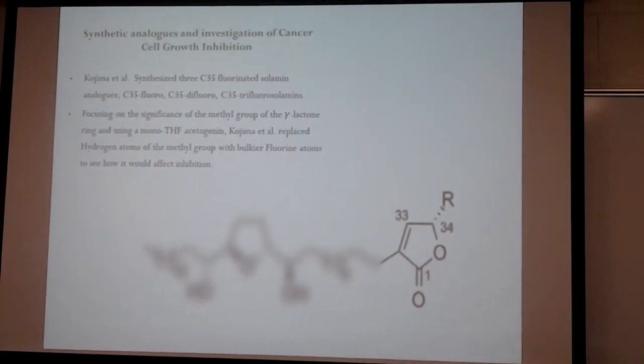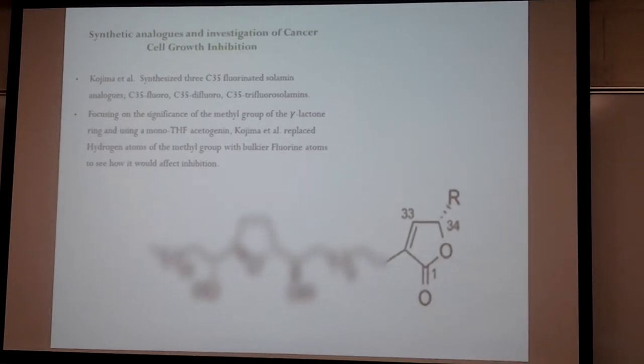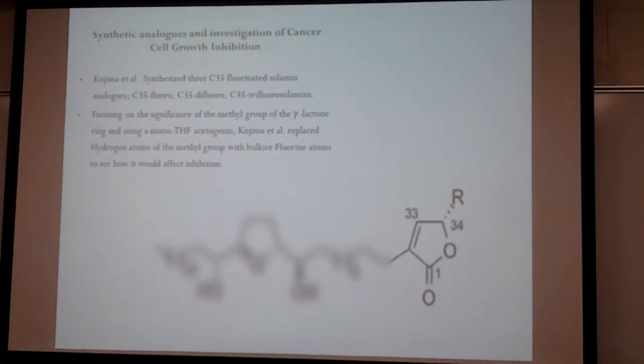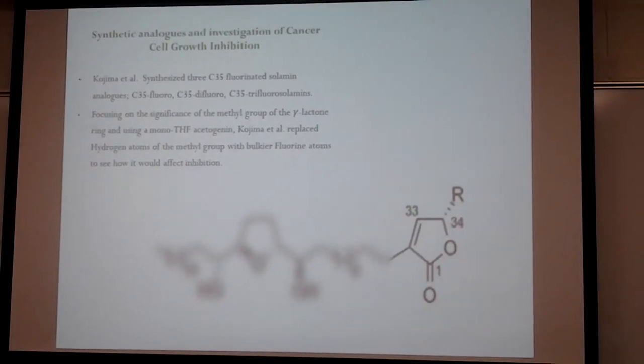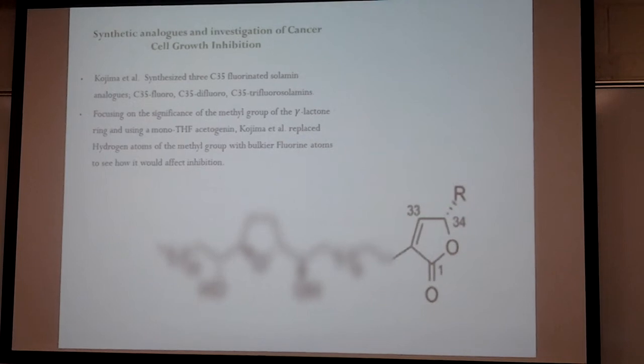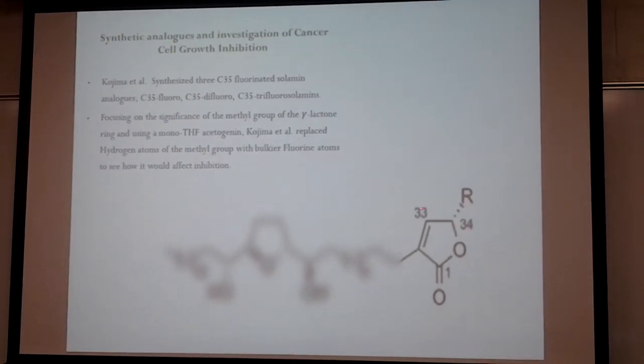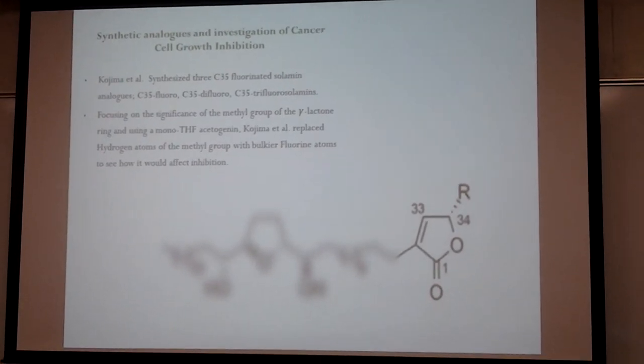Focusing on the significance of the methyl group of the gamma-lactone ring and using a mono-THF ring, Kojima replaced the hydrogen atoms of the methyl group with bulkier fluorine. This was to see if complex I still recognized the gamma-lactone even if the methyl group was altered.